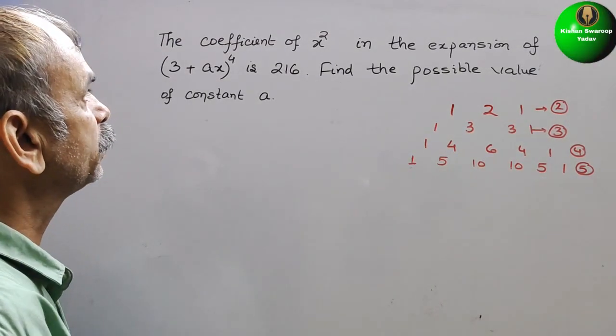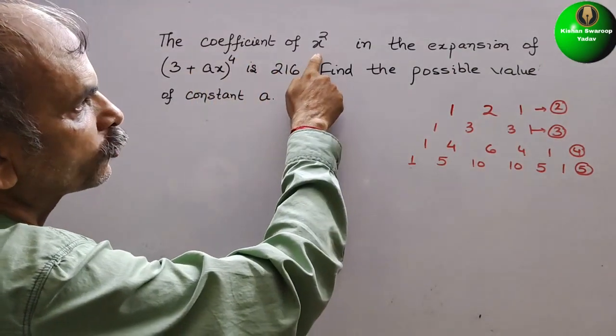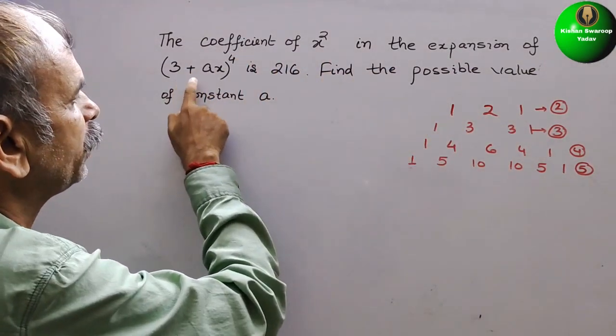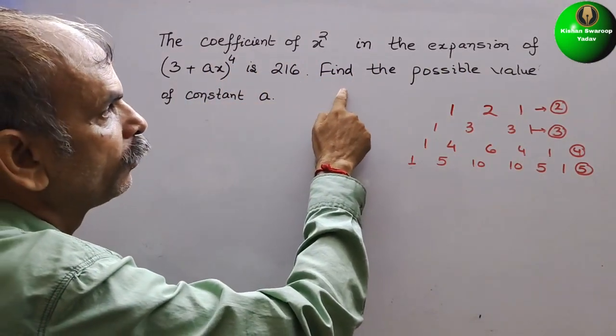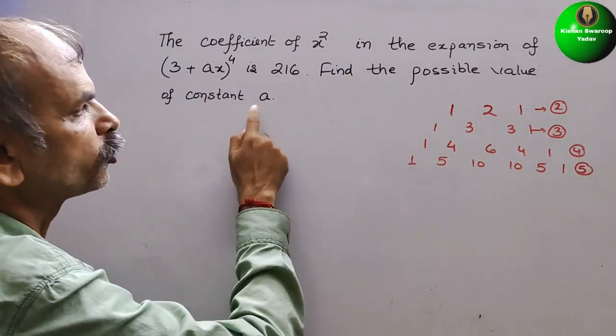Your question is: the coefficient of x² in the expansion of (3 + ax)⁴ is 216. Find the possible value of constant a.